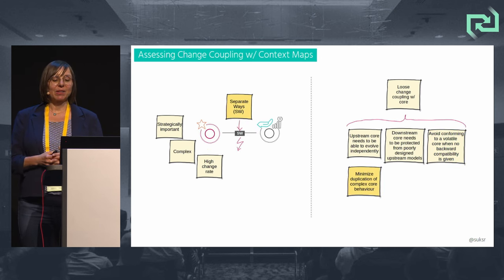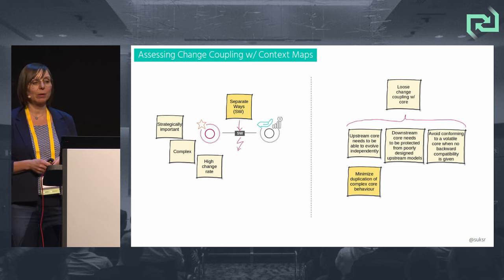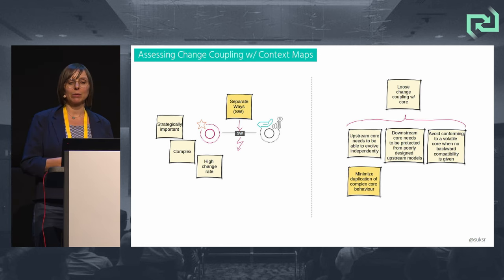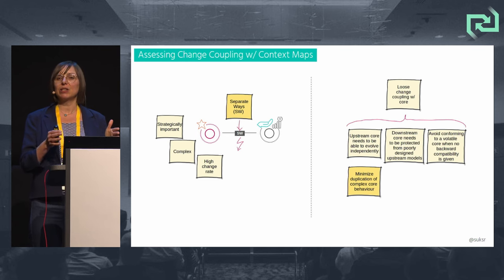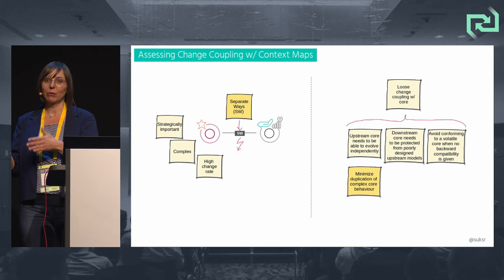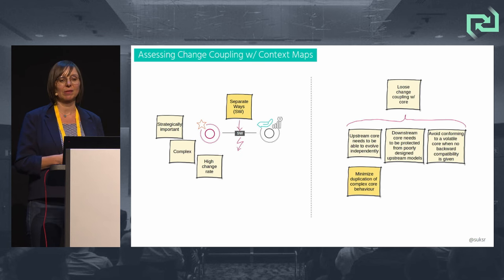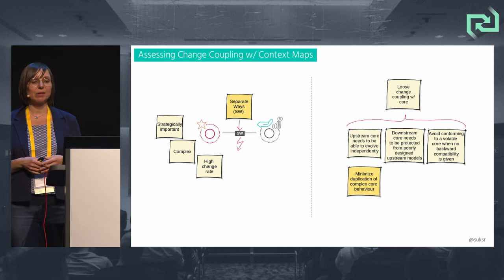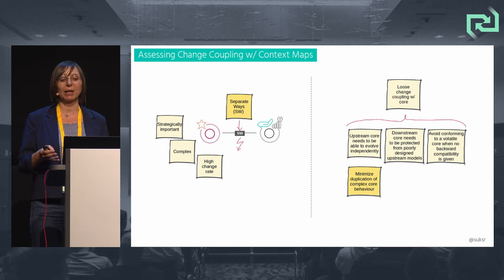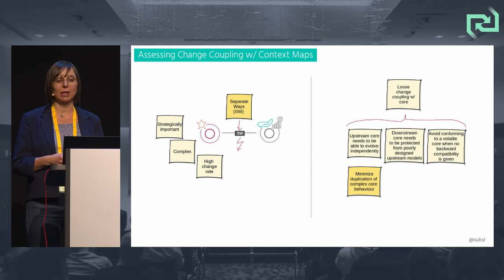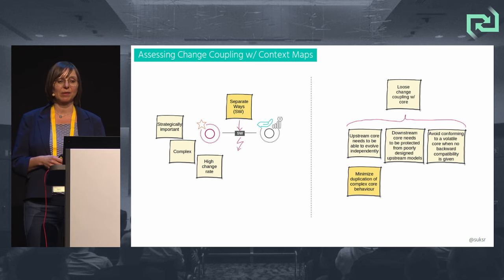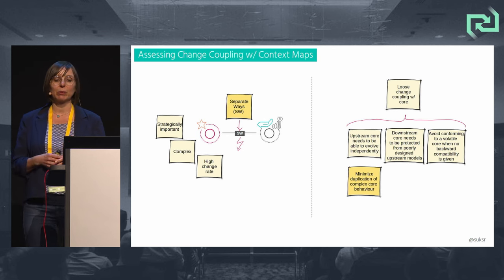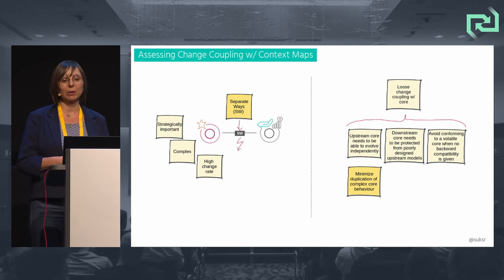We also need to minimize the duplication of complex behavior. With Separate Ways, another pattern, we duplicate functionality for specific reasons when trying to avoid integration with another bounded context. Using Separate Ways with the core domain could be very expensive since it would require duplicating complex core domain functionality, which weakens the high cohesion of core domain-related bounded contexts. Changing behavior in a core domain would then require that change across multiple bounded contexts, slowing down our responsiveness and flow of change.